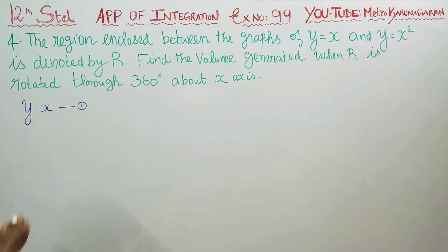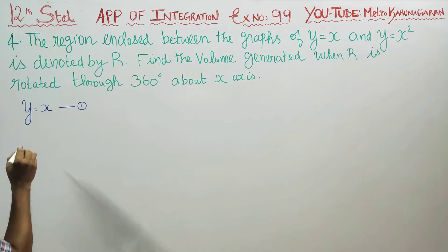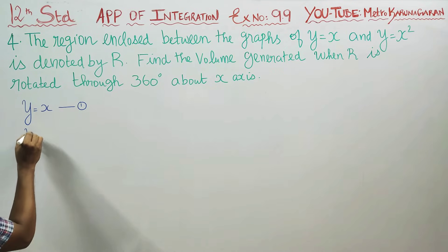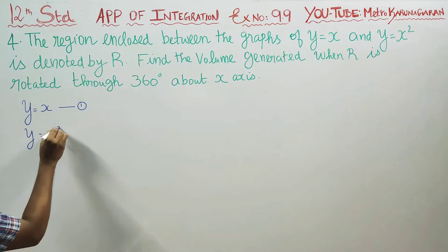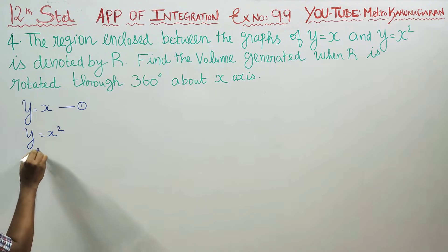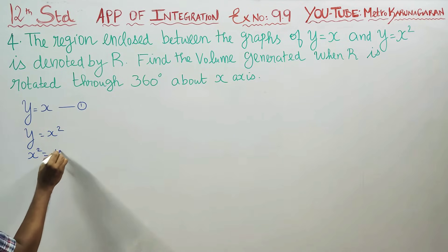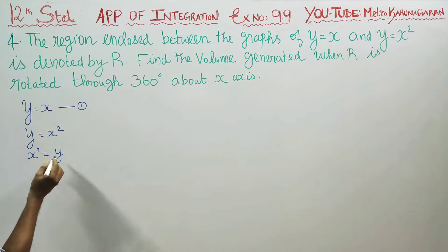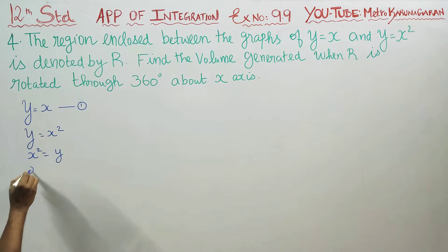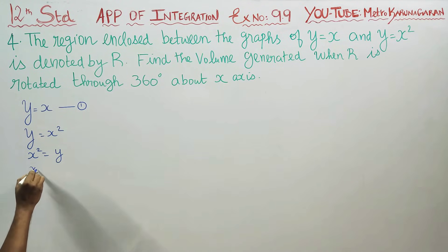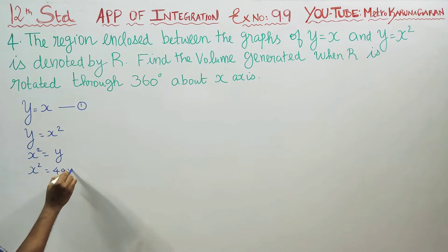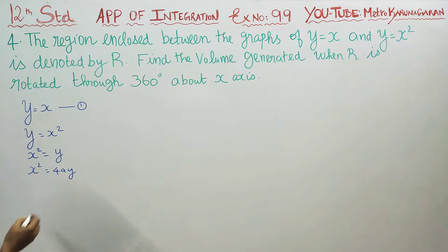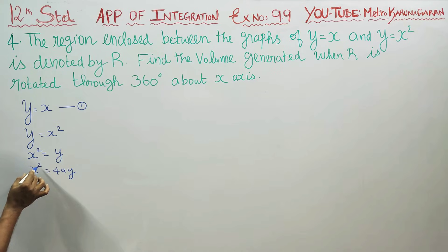Curve 2 is y = x². This can be written in the form x² = 4ay. This is a parabola symmetrical about the y-axis. Since the square term is positive, the parabola opens upward.